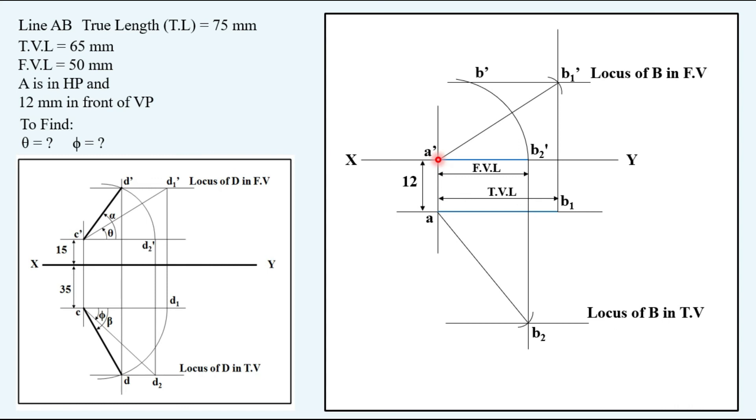Similarly keeping your compass at top view point and distance in your compass A up to B1, you have to rotate it down and obtain the final top view point B. Join A to B, that is our final top view.